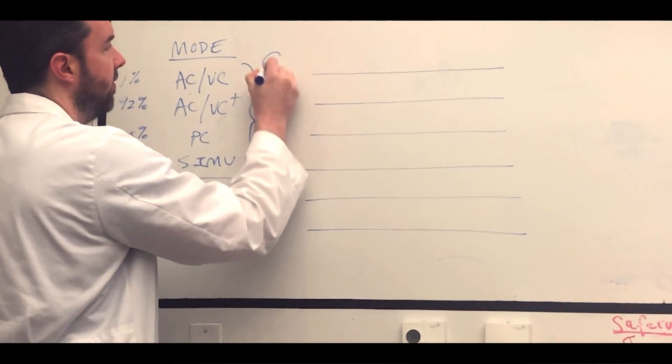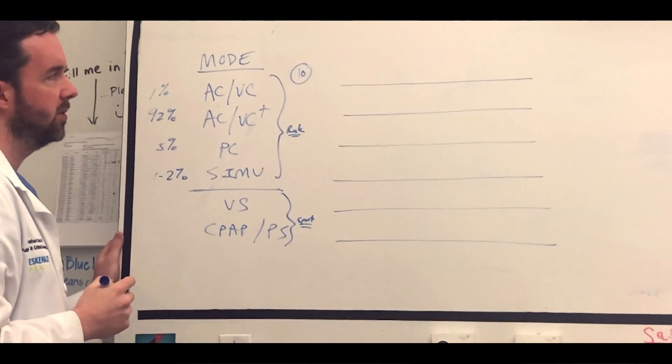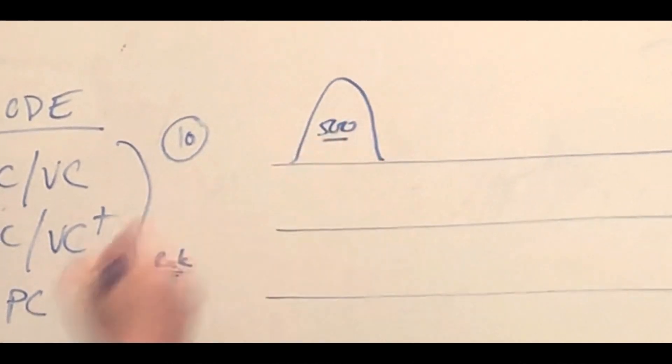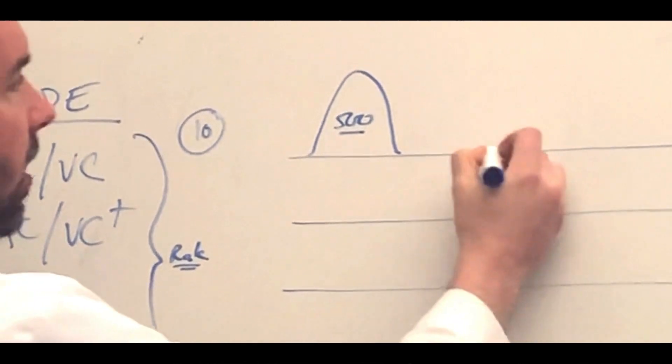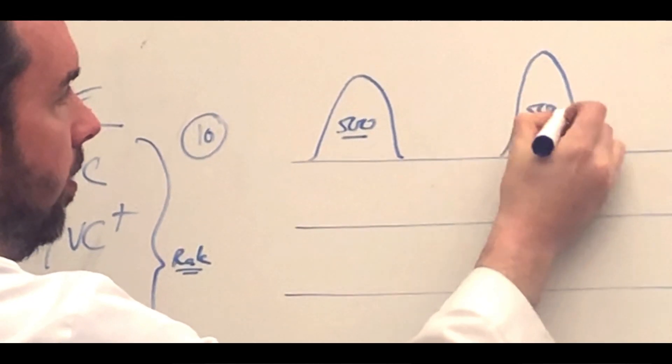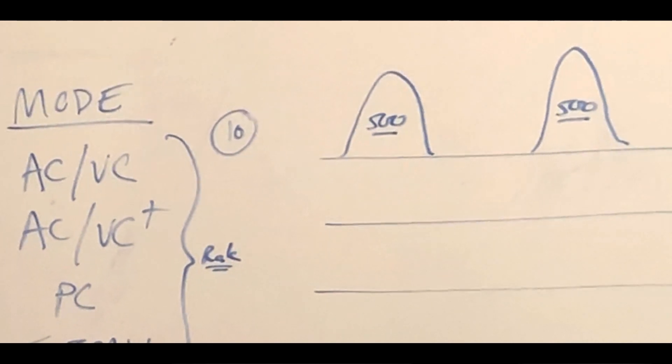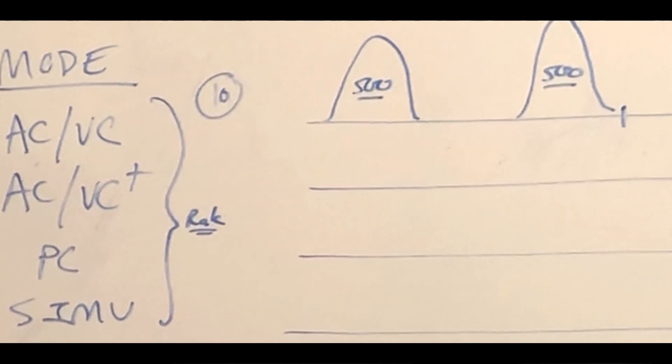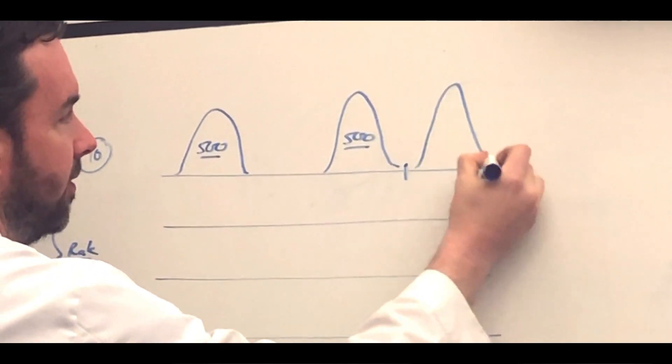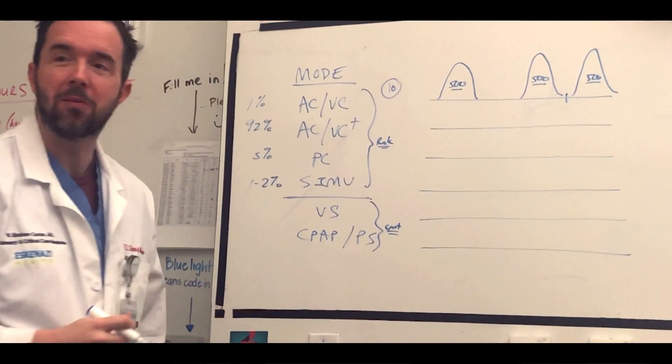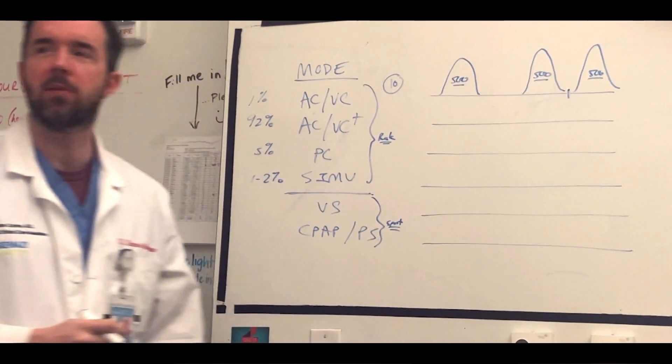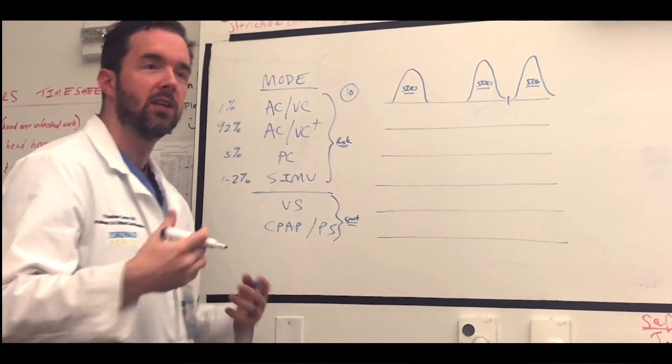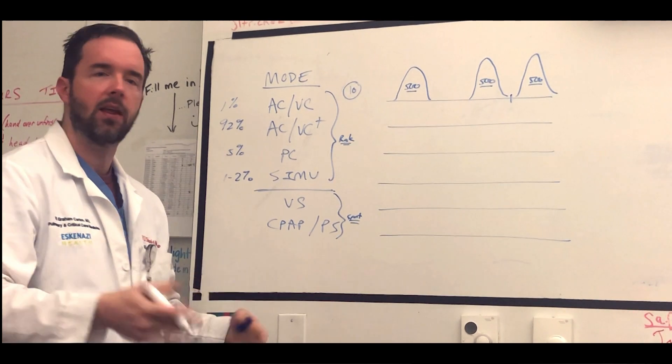So in ACVC, you set a rate, let's say for example the rate is set at 10. You set a tidal volume, let's say the tidal volume is 500. If the patient is paralyzed, they're going to get 10 breaths a minute at 500 cc's. If the patient takes an extra breath because they're not paralyzed, breath number 11, they're going to get 500. If they take 33 breaths a minute, they're going to get 33 breaths a minute at 500 cc's. So you quickly see how somebody could develop a respiratory alkalosis if they're really anxious or in a lot of pain and they have a higher respiratory rate.